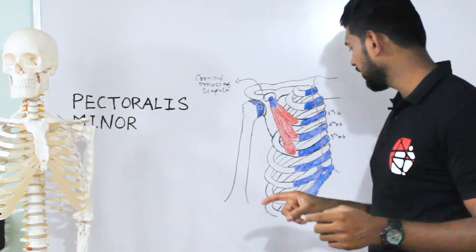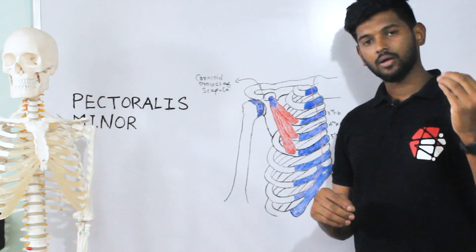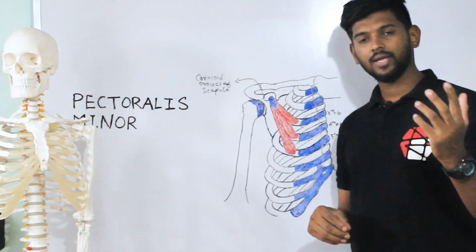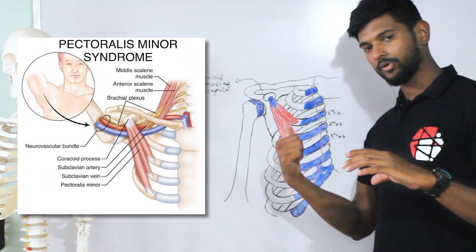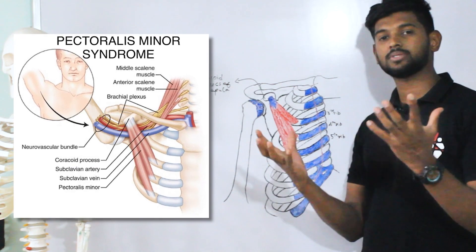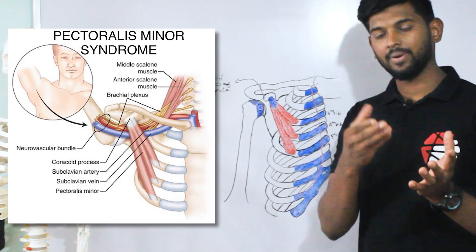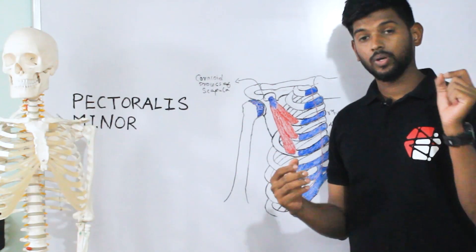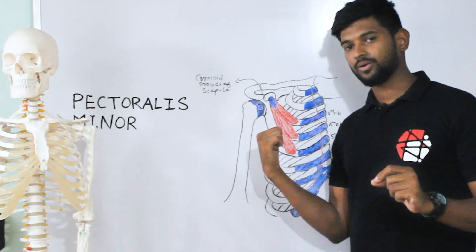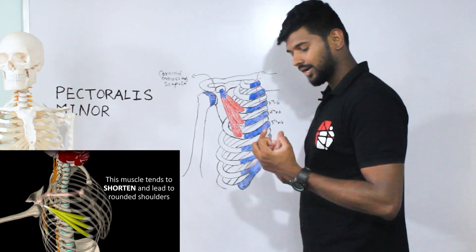Regarding clinical correlations of the pectoralis minor muscle: if this muscle gets tight, it causes two major problems. The first is that the brachial plexus, subclavian artery, and subclavian vein pass sandwiched beneath the pectoralis minor muscle. If the pectoralis minor gets tight, it compresses these structures — this is called pectoralis minor syndrome.